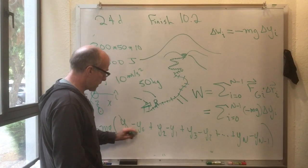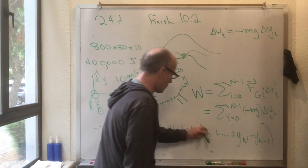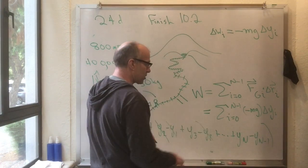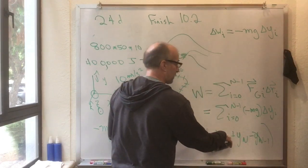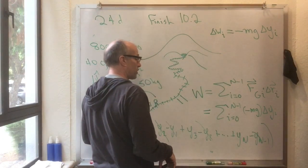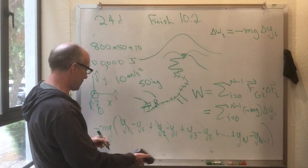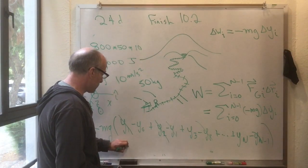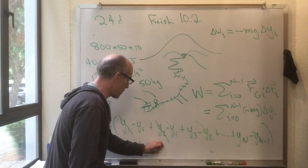And now you've got a nice fact. See the y1 here? That cancels with the y1 there. See the y2 there? That cancels with the y2 there. And that's just a cancellation. It's going to keep up all the way until you get to the yn minus 1, which is going to cancel with the yn minus 1 in the preceding term. And all you're left with, with all those cancellations, is minus mg times y sub n minus y sub 0.